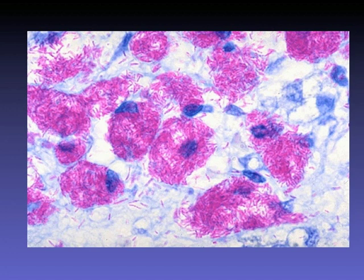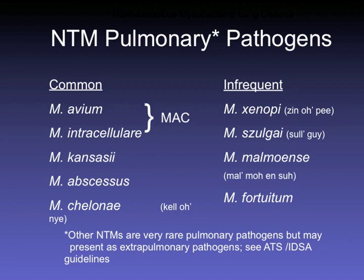This is the Ziehl-Neelsen stain, your AFB smear. We can see clumps of intracellular non-tuberculous mycobacteria, with some extracellular organisms as well. Among the common NTM pathogens, you have avium and intracellulare — your mycobacterium avium complex — then M. kansasii, and then your rapid growers: M. abscessus and M. cheloniae are the most common rapid growers that are pulmonary pathogens.